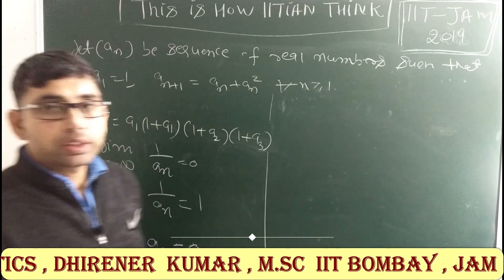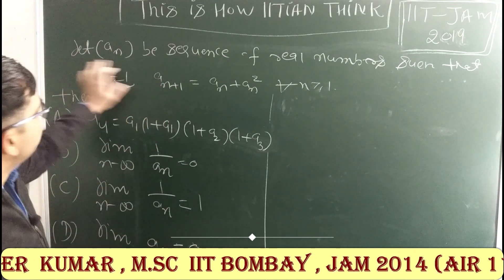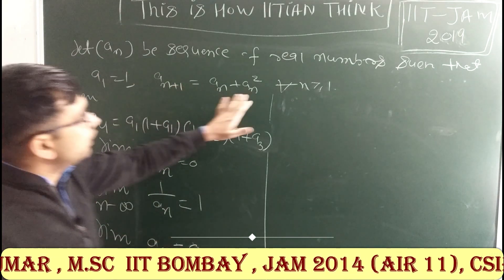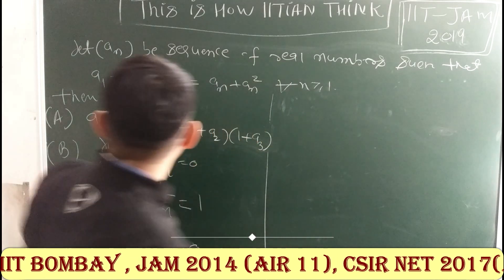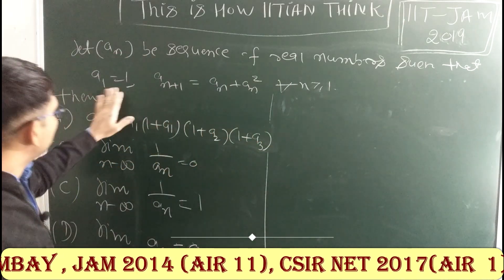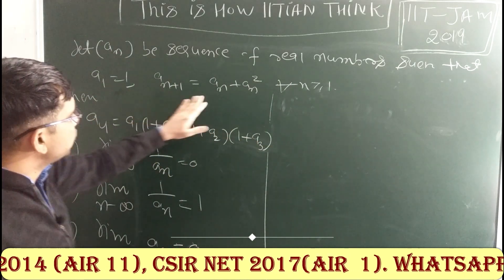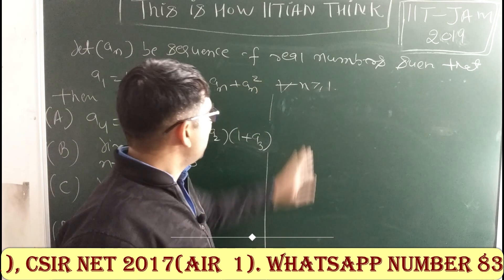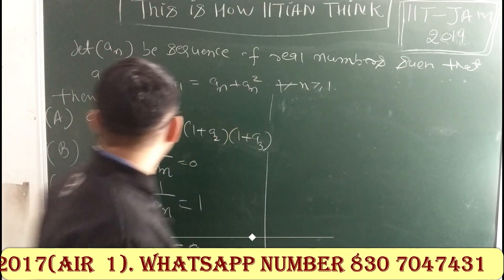The problem is: you have a sequence of real numbers such that a₁ equals 1, and aₙ₊₁ equals aₙ plus aₙ², for every n greater than or equal to 1.